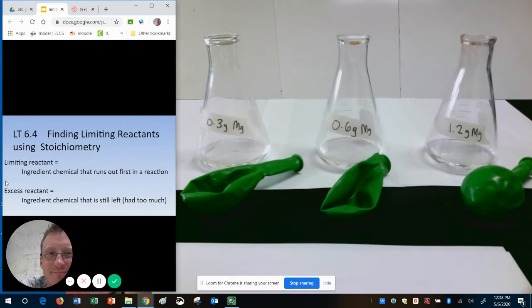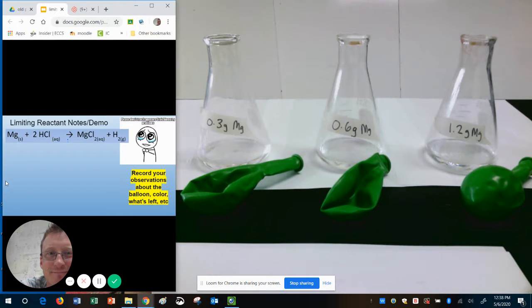Today the reaction we're going to do is magnesium metal with hydrochloric acid HCl. When it reacts it produces a salt magnesium chloride which stays dissolved in liquid and it produces hydrogen gas.